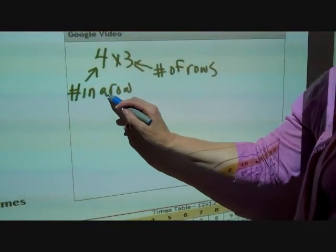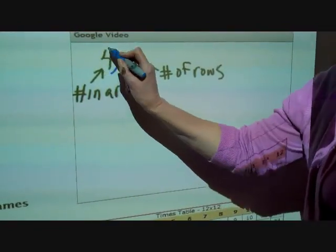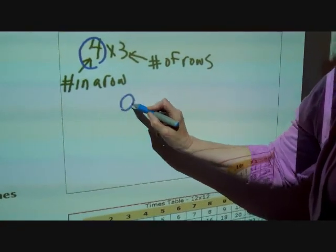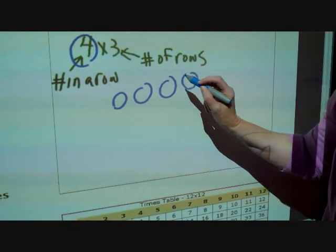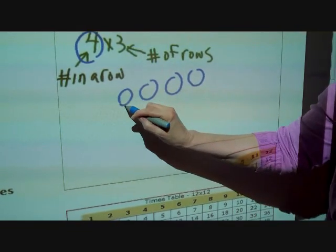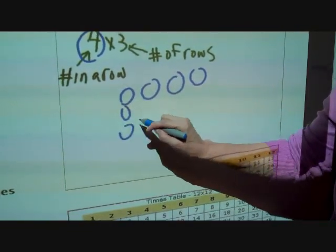Going over here, the number in a row. So this says 4: 1, 2, 3, 4. The number of rows I have is 3, and I'm going to fill that in.